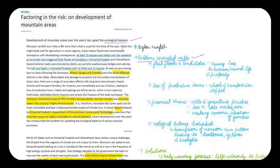The first problem mentioned in this editorial is flash floods and landslides. Monsoon rainfall over India is eight percent more than usual for this time of year. The editorial begins by noting that this year's annual rainfall is eight percent higher than normal. While this may bode well for agriculture in some regions, it also means floods and concentrated downpours with devastating consequences — a blessing for some agricultural regions but a threat to others.